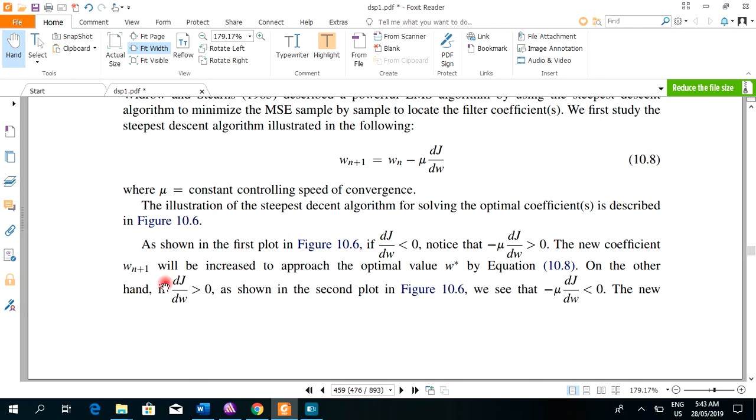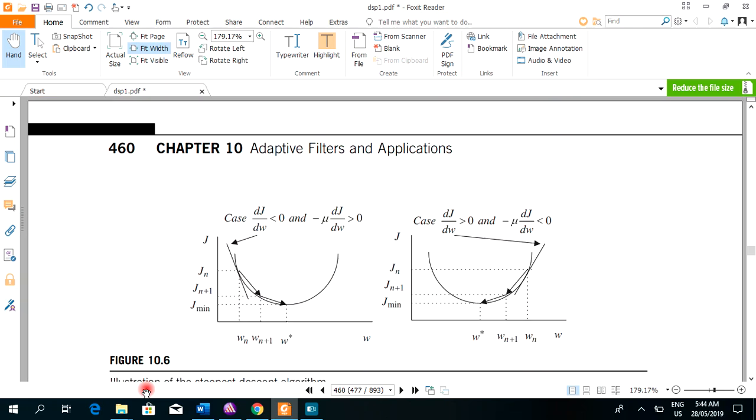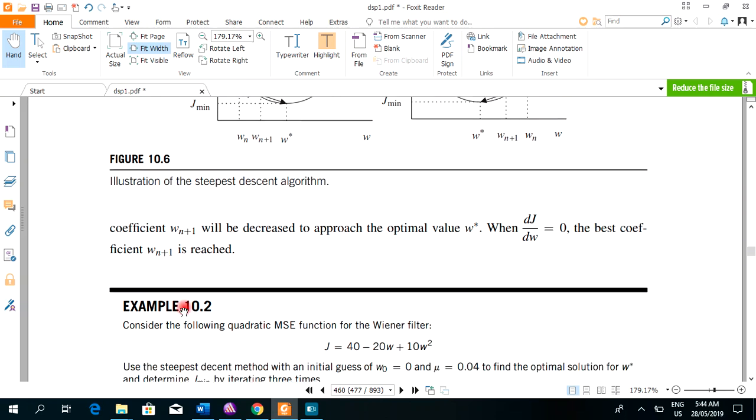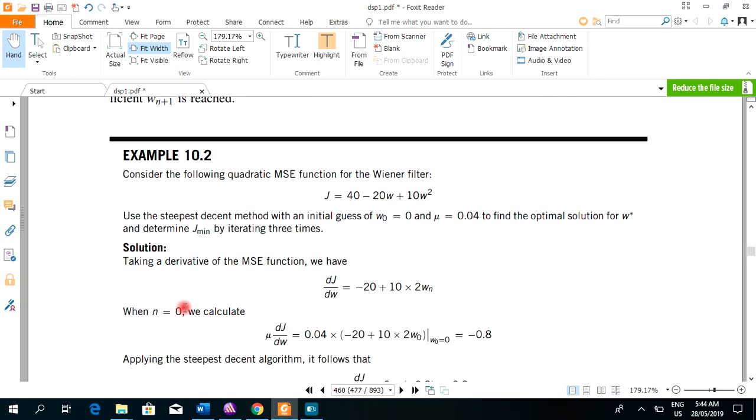On the other hand, if this is greater than zero, then if it is multiplied by mu and negative mu, the result will be less. The next weight will be reduced, will be decreased and when it comes out to be zero, the best coefficient is reached. Let's take an example and then finish it off.